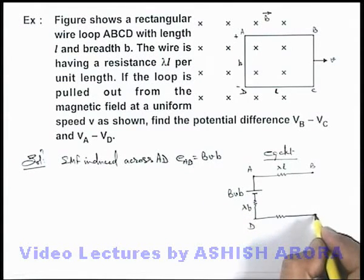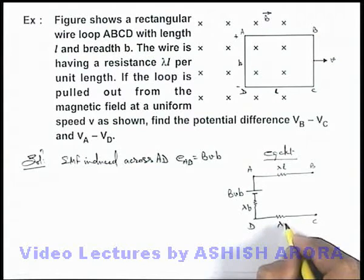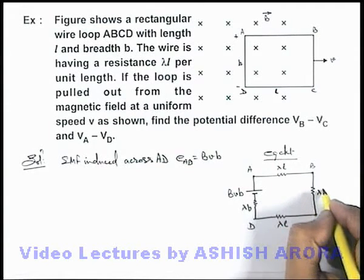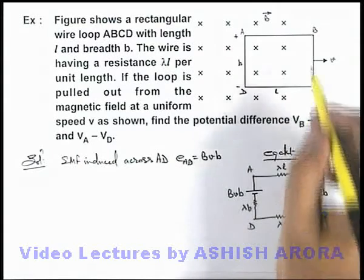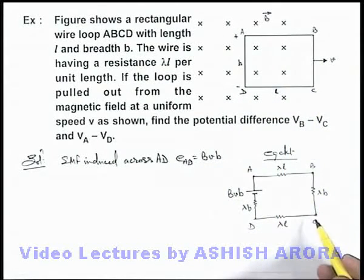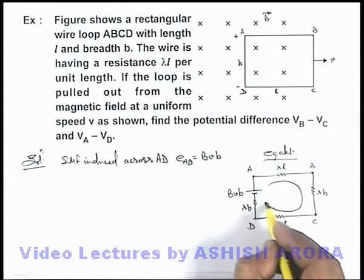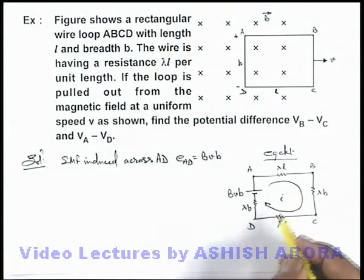Similarly, across points D and C the resistance is λl, and that across B and C is λb. No EMF is induced across BC because it is out of the magnetic field. This is a single loop circuit in which a current i flows.